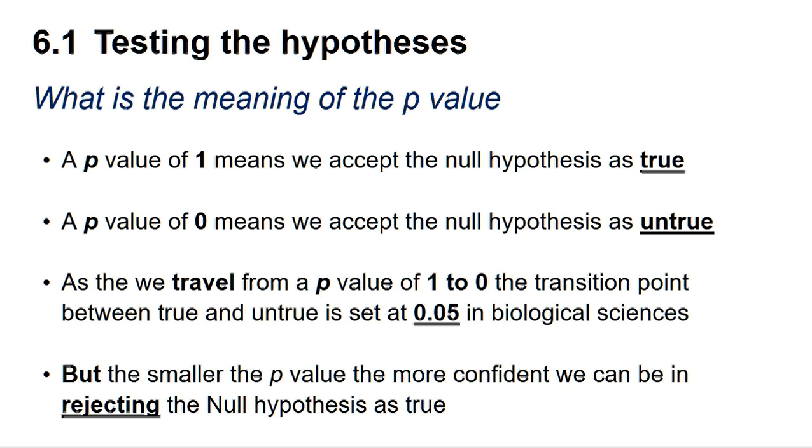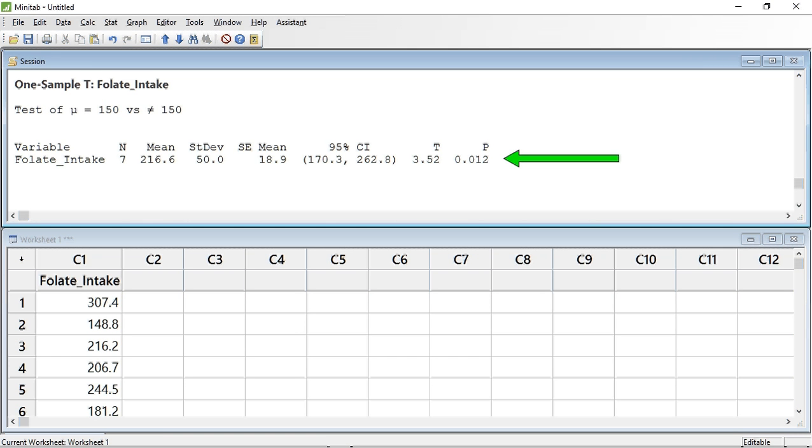The smaller the p-value below 0.05, the more confident we can be in rejecting the null hypothesis. A p-value of 0.012 is below our transition value of 0.05, suggesting the result is significant and that we can reject our null hypothesis and that there is a difference between the daily intake of folate in male students from the Balkans whilst living at home compared to the mean intake in the UK.